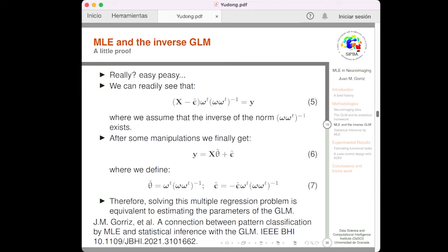Indeed, we can give a little proof to demonstrate the connection using matrix algebra. We can really see that the equation 4 is equivalent to this equation 5, where we have left y on the right-hand side of the equation alone. And we assume that the inverse of the norm, this term, is 6, so the norm is not 0. After some manipulations, we finally get this novel equation, where we define tilde theta and epsilon as the new parameters theta and epsilon related to the ones that we have in the general linear model. Therefore, solving this multiple regression problem is equivalent to estimating the parameters of the GLM. More details about these connections can be found in the reference at the bottom of the slide.